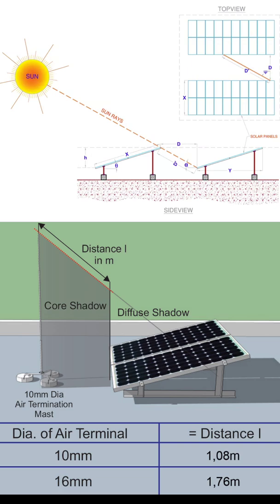This app is very important if you need a reference for how much row-to-row spacing is required on site. If you're looking at an already-installed plant and it's casting a shadow from one row onto another, you can do the estimation using this app and inform your design team or the end client that there is a shadow issue with the installation or design.